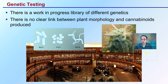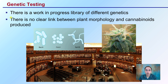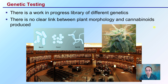That requires genetic testing. There's a work in progress — a library of different genetics. There's no clear link between plant morphology and the cannabinoids produced. This is an important distinction: just because we see an indica or sativa name, we can't automatically associate a certain amount of cannabinoids or terpenes with that cultivar. As a result, we need to look more at the chemical profile and not just indica or sativa when talking about cannabis, as is so often done.